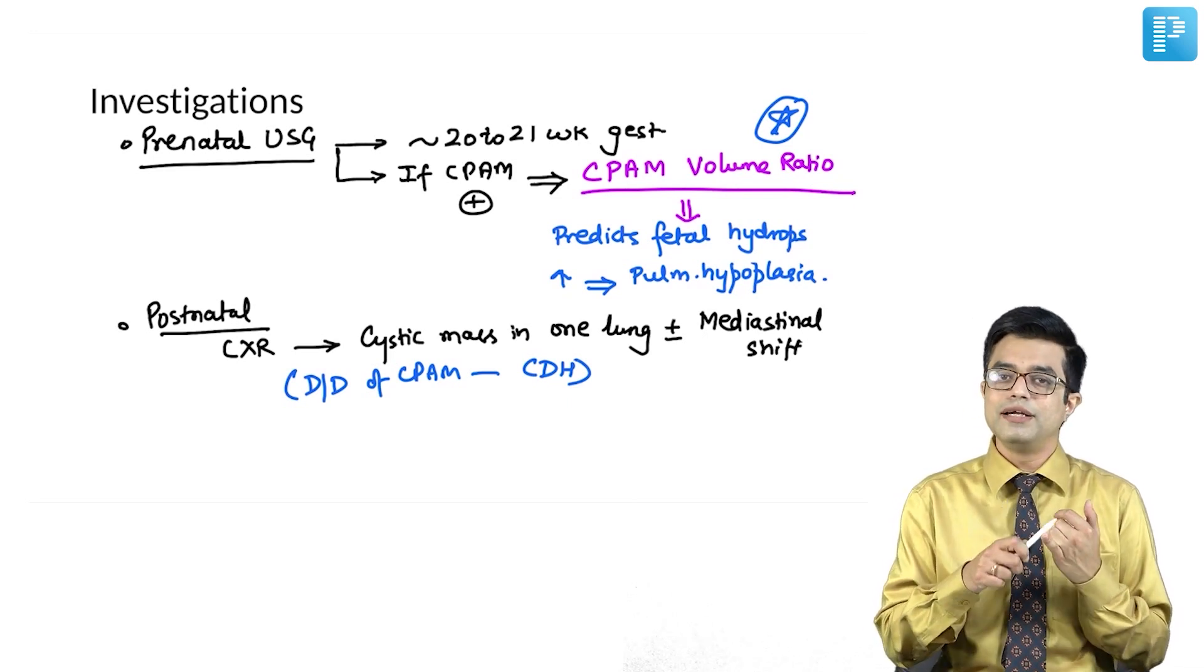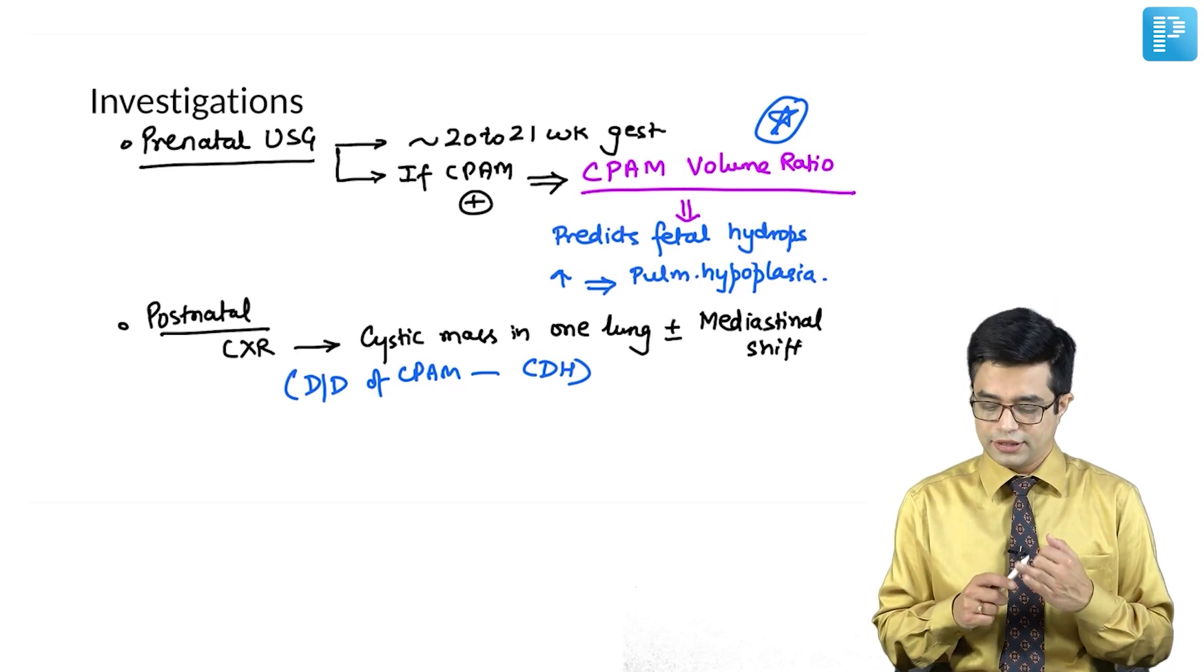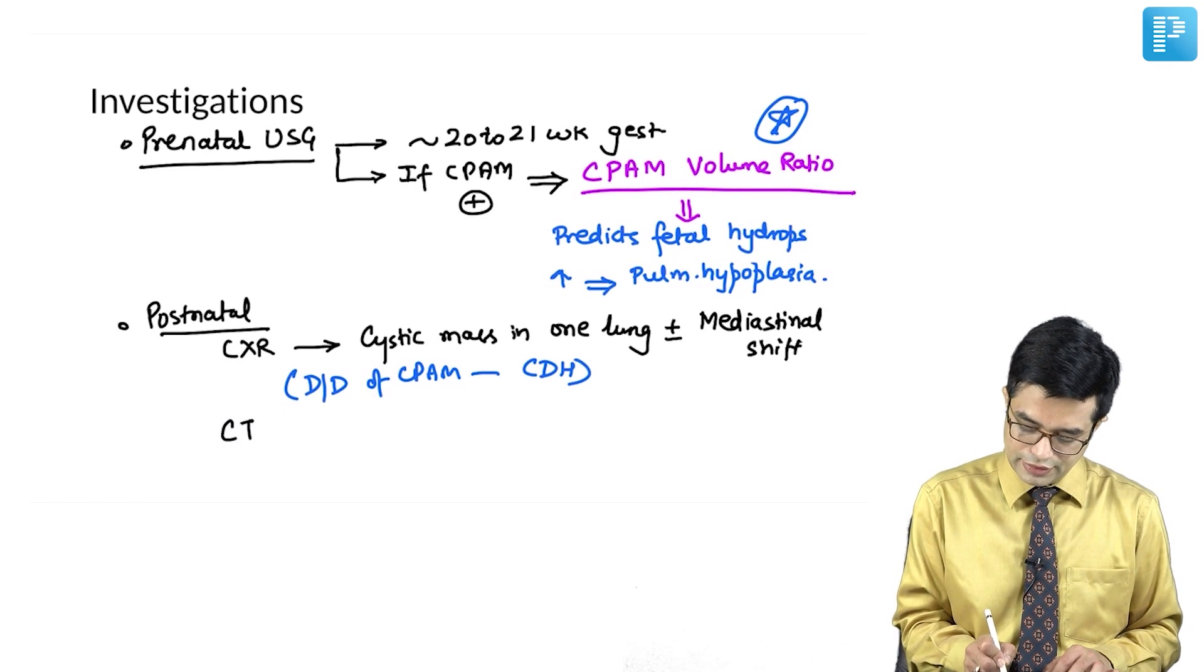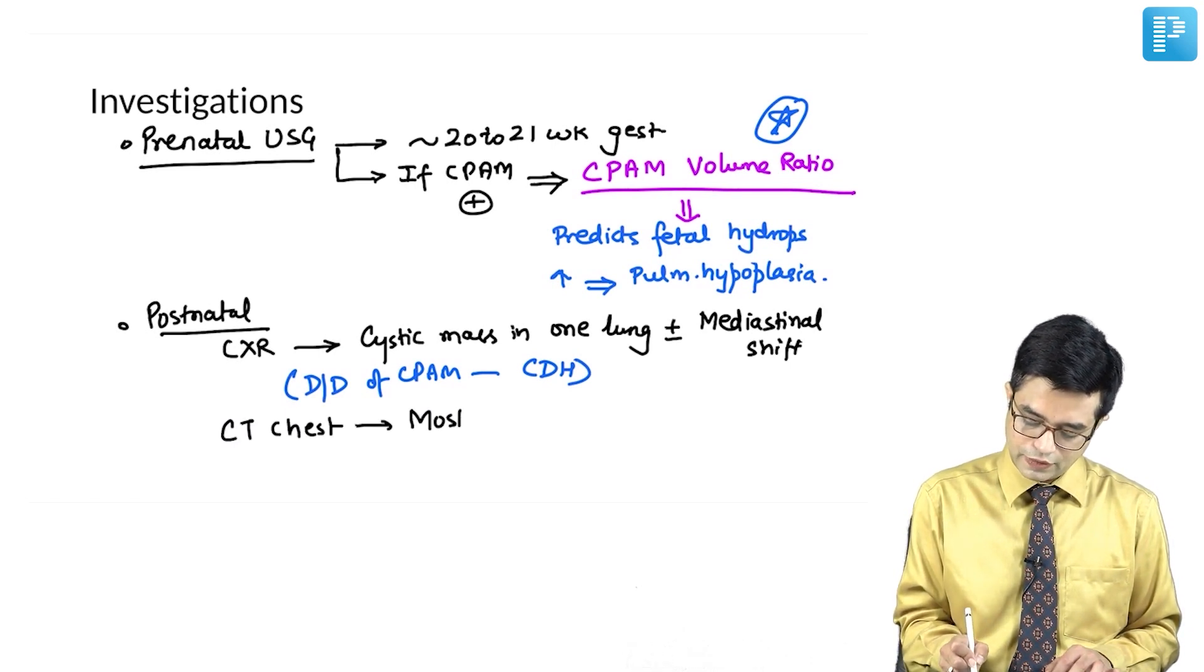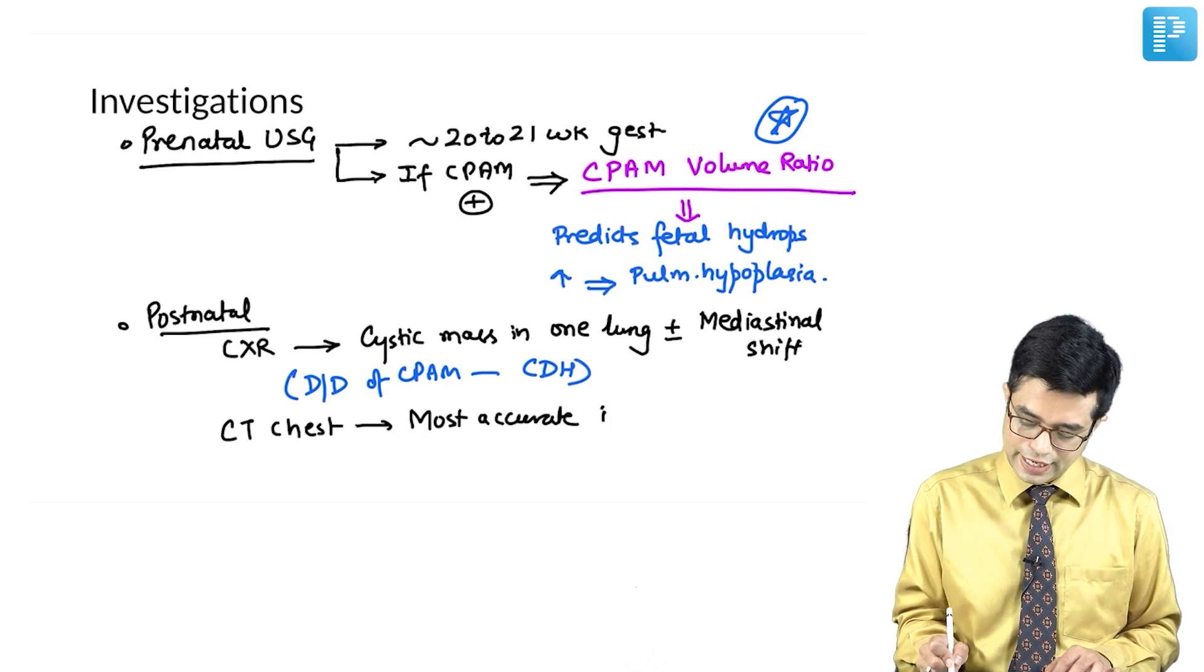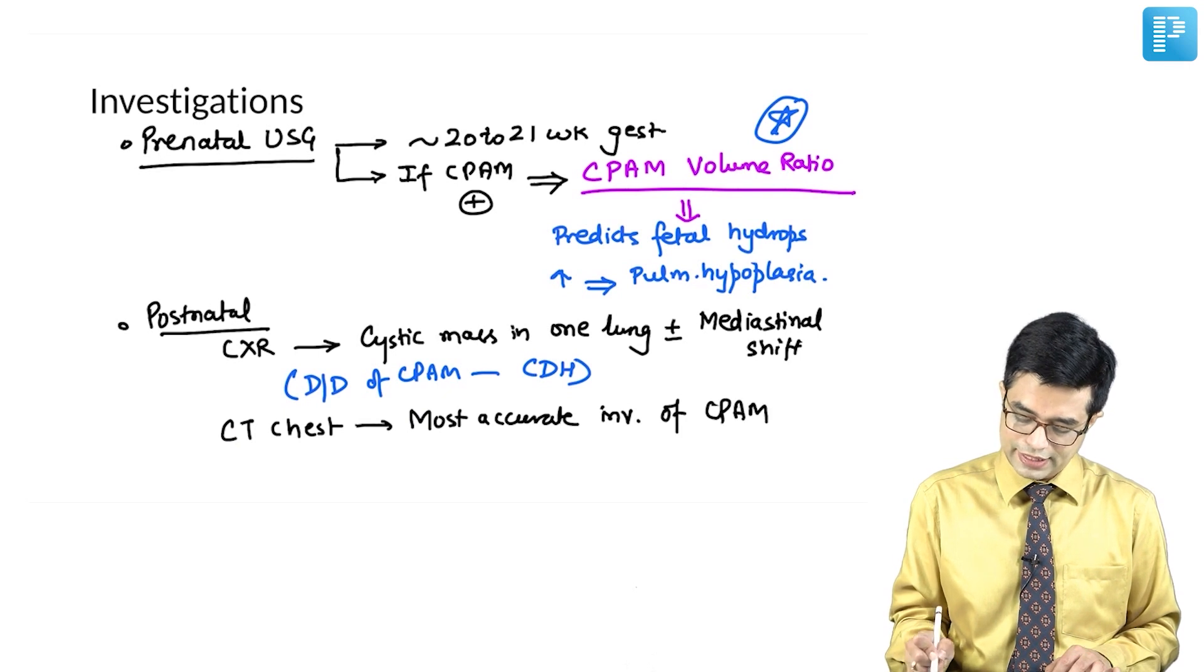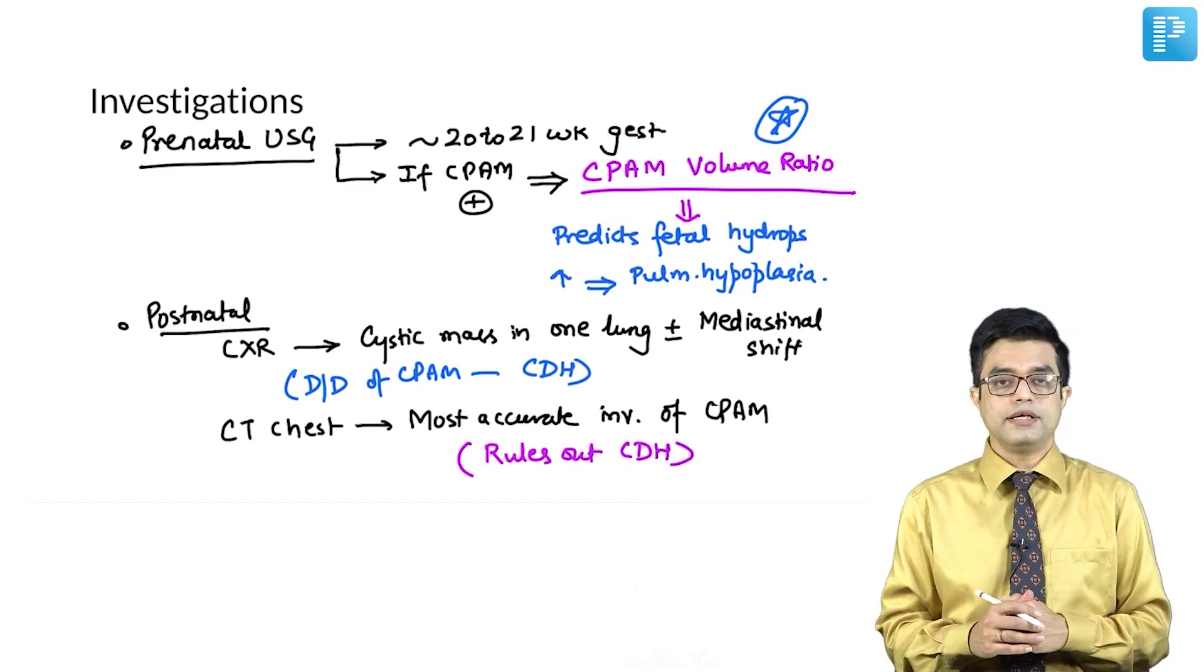You need to look at the clinical correlation as well as perform CT scan of the chest. CT scan of the chest is considered to be the most accurate investigation for diagnosing and delineating patients of CPAM. And this is the one which also rules out any doubt of congenital diaphragmatic hernia as well.